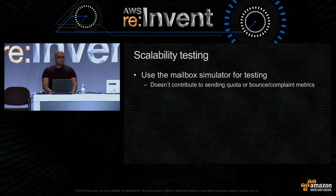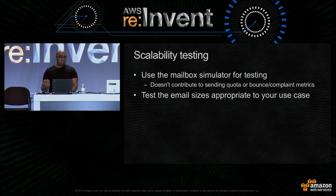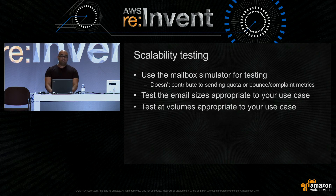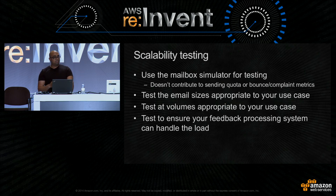When you do load testing, there are a couple of key things to keep in mind. You need to replicate the real use case of email that you have in production — monitoring the email sizes you're actually sending and load testing with those same sizes, and sending emails at the same volumes you would in production. Lastly, you also want to ensure that your feedback processing system is scaled up and able to handle the increased load in addition to your core sending application.